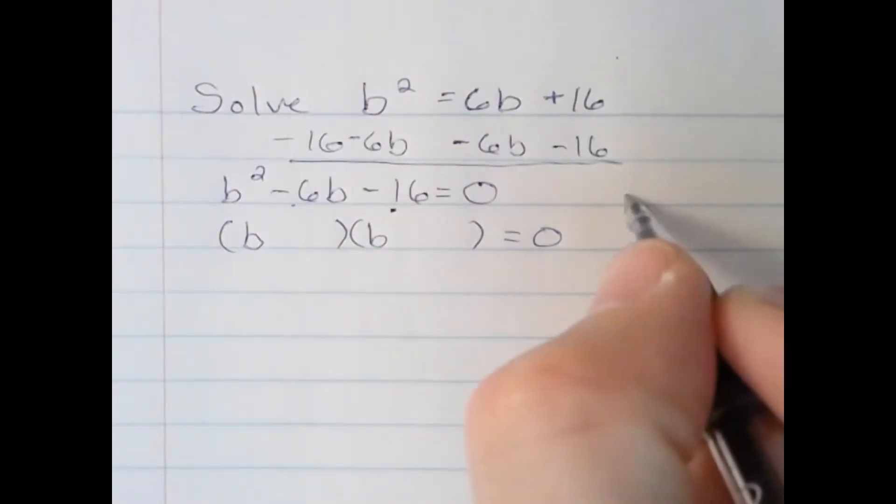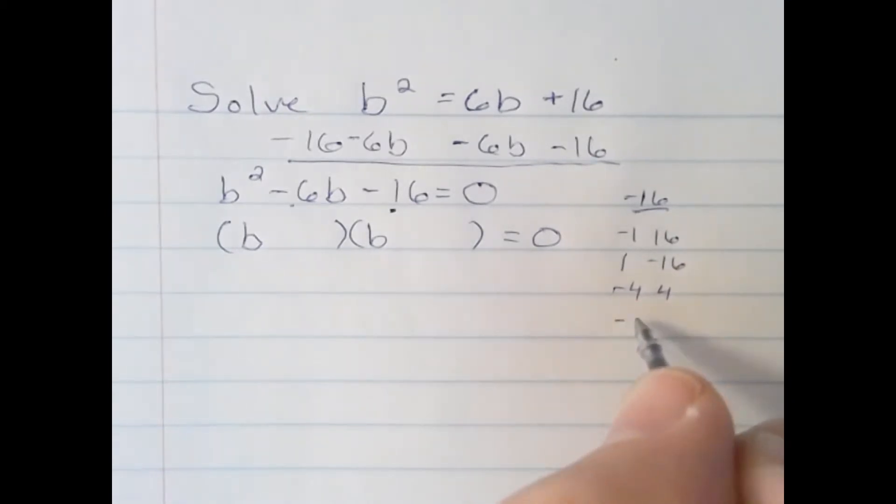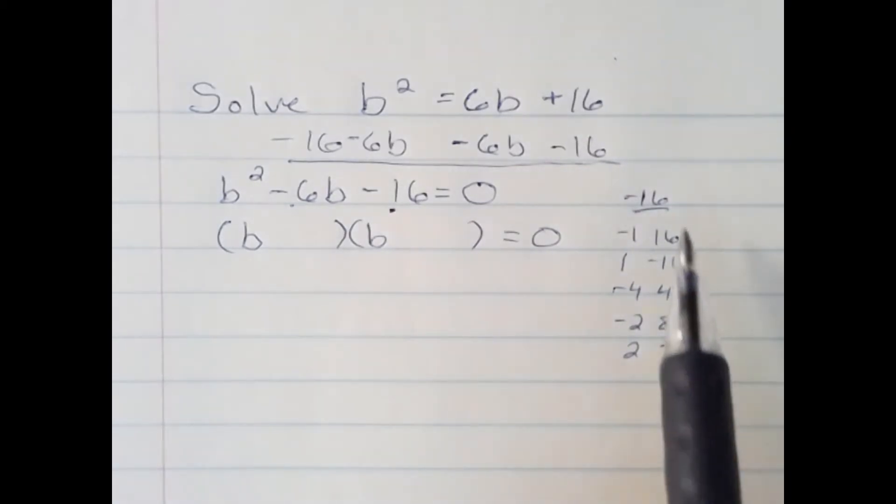Just to illustrate, how do I get negative 16? Lots of ways. Negative 1, 16. Positive 1, negative 16. Negative 4, 4. Negative 2, and positive 8. Positive 2, and negative 8. All of these are ways to get negative 16.